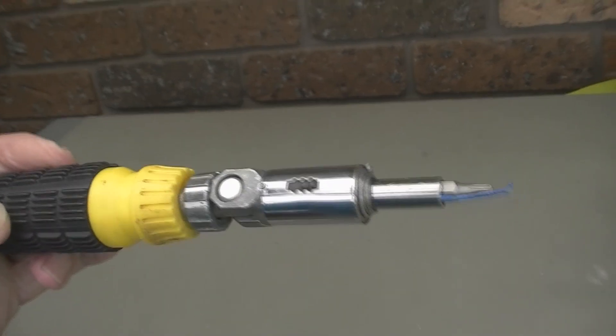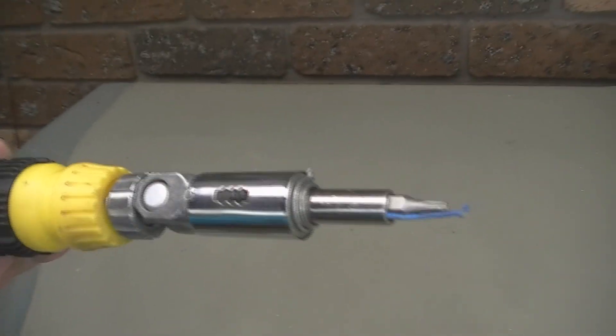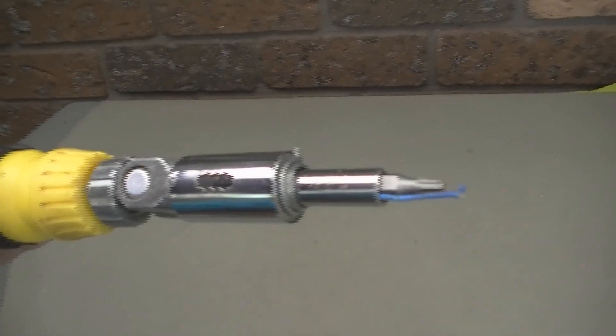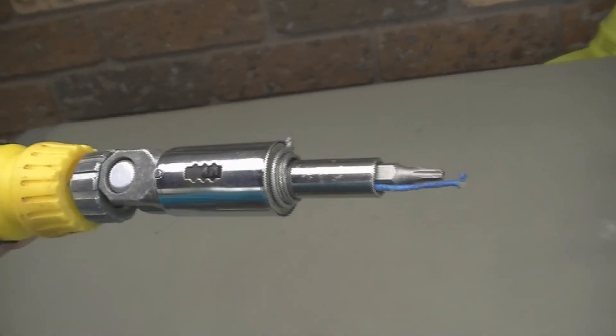If you're wondering about this blue thread, it's just to jam the star bit at the end, because when they're loose and they fall off the tool, it's a bit of a problem.